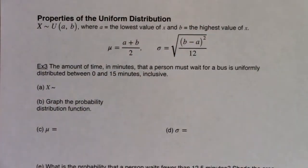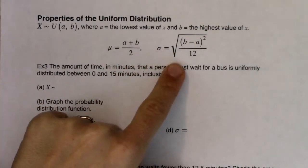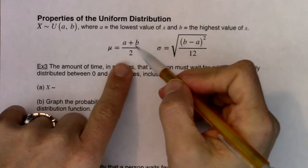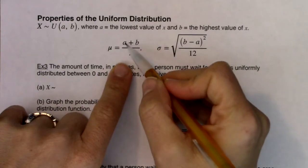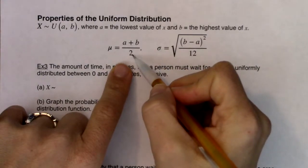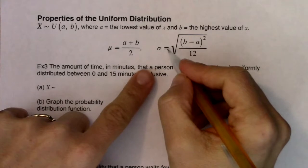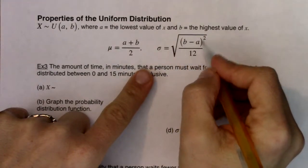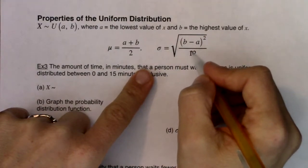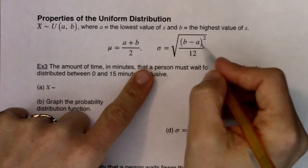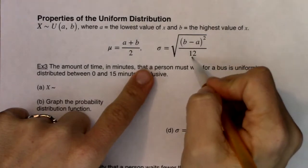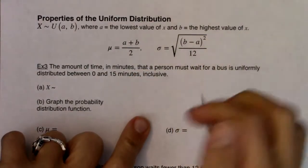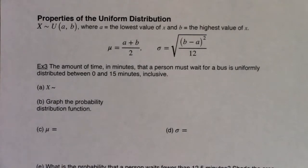If you are on a uniform distribution and you want to find the mean and the standard deviation: the mean is the average of a and b, so a plus b over 2. The standard deviation is the square root of b minus a squared over 12. As a note, the variance would be the square of this — b minus a squared over 12 without the square root. With that, let's start looking at a free response question.